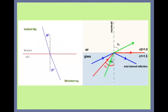Looking at a combined diagram, here I have taken glass as the denser medium and air as the rarer medium. There is a normal at the point of incidence. The first green ray shows that when the angle of incidence in glass is small, there is a refracted ray at angle theta 2. When we increase the angle of incidence so that the angle of refraction becomes 90 degrees, that angle of incidence theta is known as the critical angle. Increasing the angle further, the angle of refraction also increases.